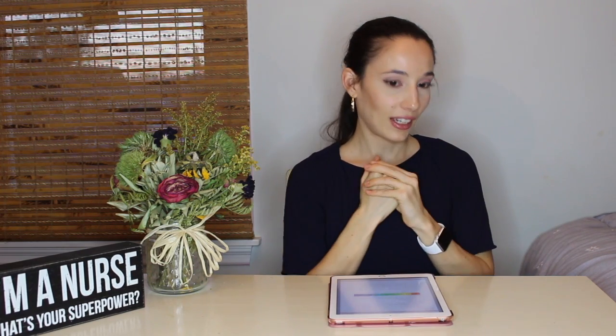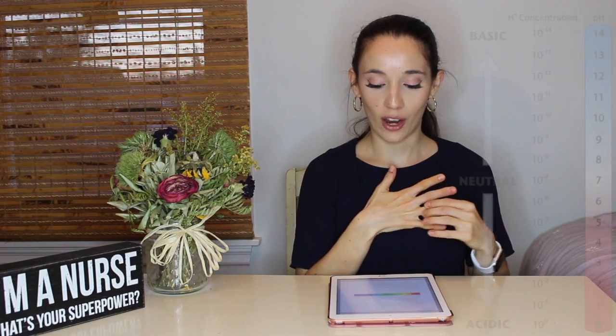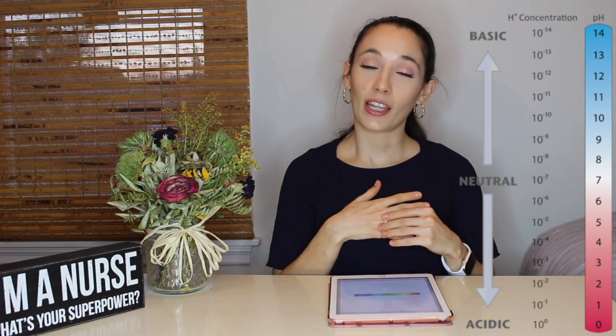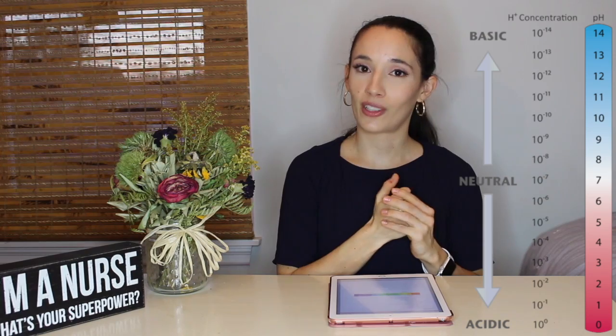A pH of 6 is 10 times more acidic than a pH of 7, and a pH of 5 is 100 times more acidic than a pH of 7. A pH of 9 is 100 times more basic than a pH of 7.